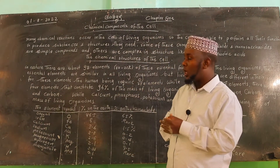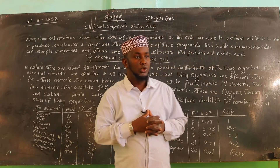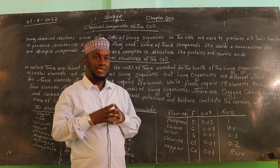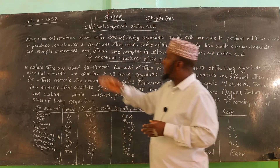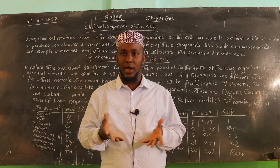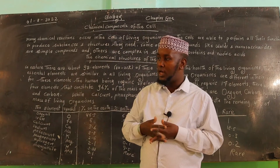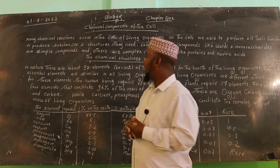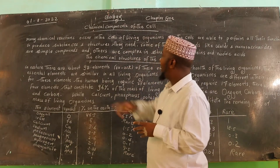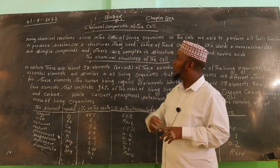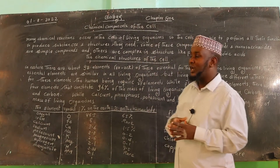What is the chemical component of the cell? The chemical component of the cell is very important to understand and utilize. These are the elements that we have to study. Many chemical reactions take place in the living cells of living organisms.